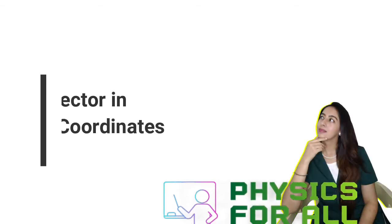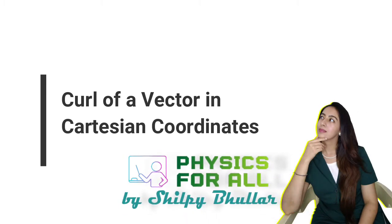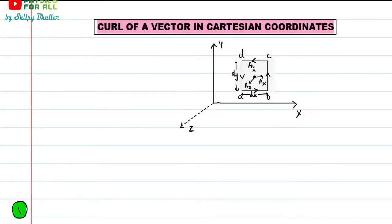Hello everyone. I welcome all of you to Physics for All by Shilti Bhullar. As you all know, we are doing a video lecture series based on the topic vector analysis. Today, we are going to discuss curl of a vector in Cartesian coordinates. In the previous video, we discussed the physical significance of curl. Now there is a need to understand curl in terms of Cartesian coordinates so that we can understand how we obtain the formula — the expression for curl of a vector that we derived a few videos before. So let's get started.